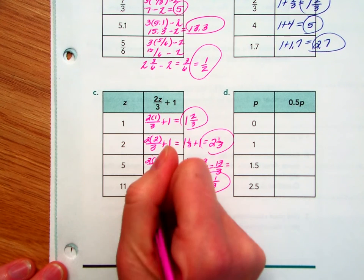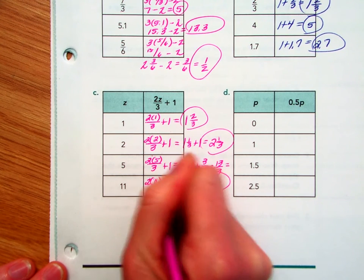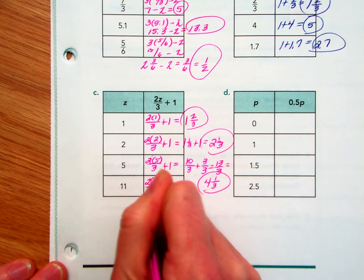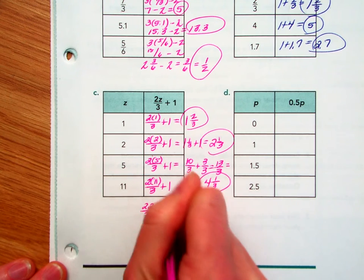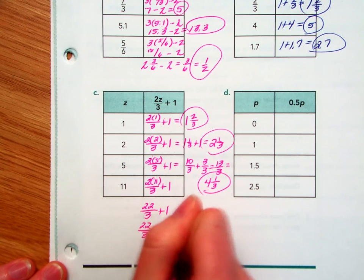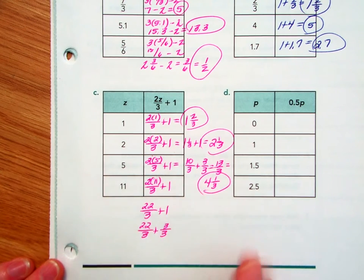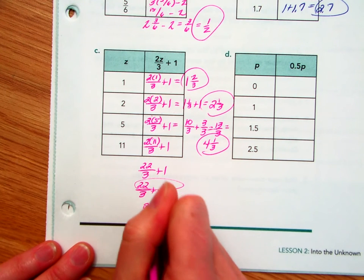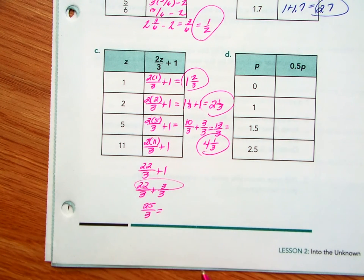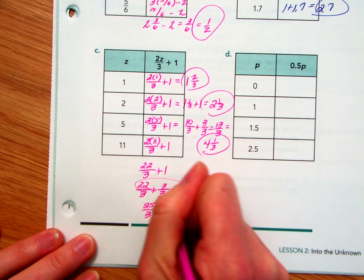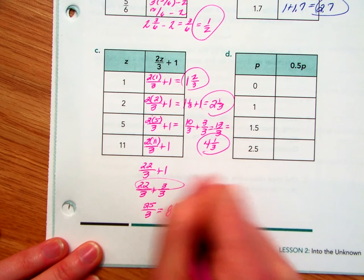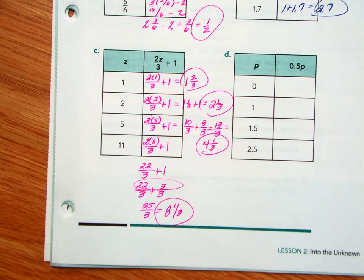And then last but not least, substitute as 11. That would be 22 over 3 plus 1. We could just make 1 more 3 over 3. I'm doing that to get those like denominators so I can add simply the numerators. I've got 25 over 3. Let's see. 3 goes into 25 8 times with a remainder of 1. 8 and 1 third. I hope you got that right.